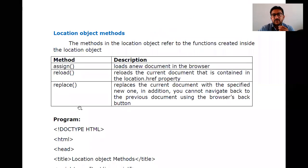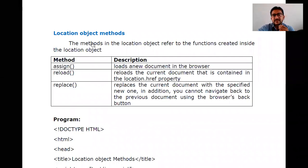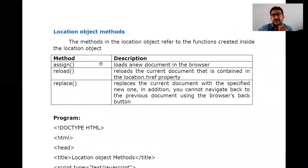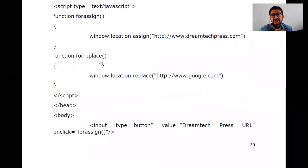Coming to the location object methods — the three methods available are: assign, reload, and replace. With the help of these methods, we can access and manipulate locations in the window. So the properties are href, protocol, host, and hostname; and the location object methods are assign, reload, and replace.